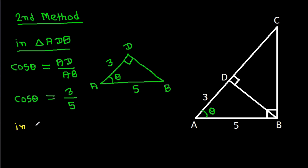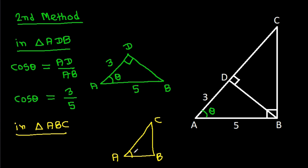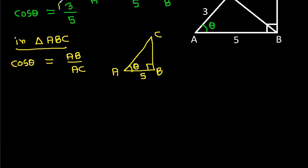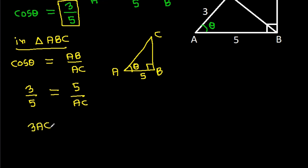In triangle ABC, this angle is 90 degrees. So cos theta equals AB by AC. Cos theta is 3 by 5, which equals AB (5) by AC. If we cross multiply, then 3 AC equals 25, so AC equals 25 by 3.